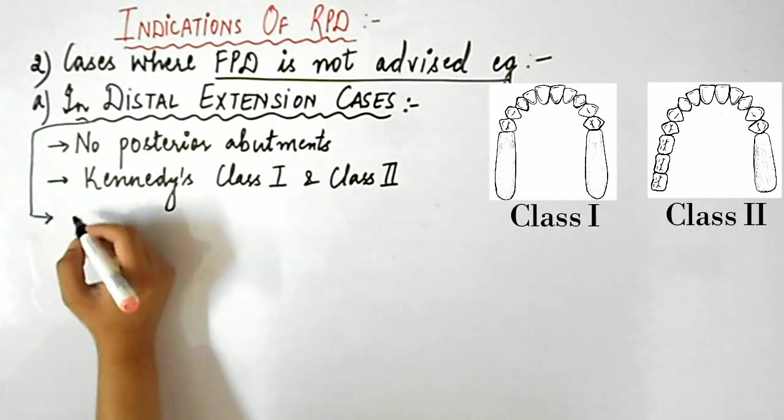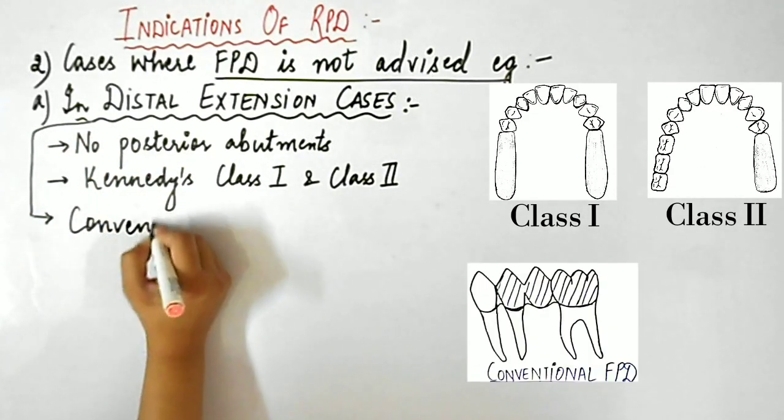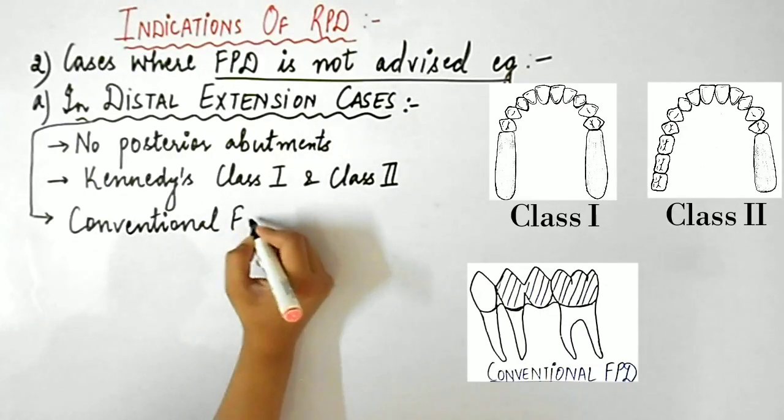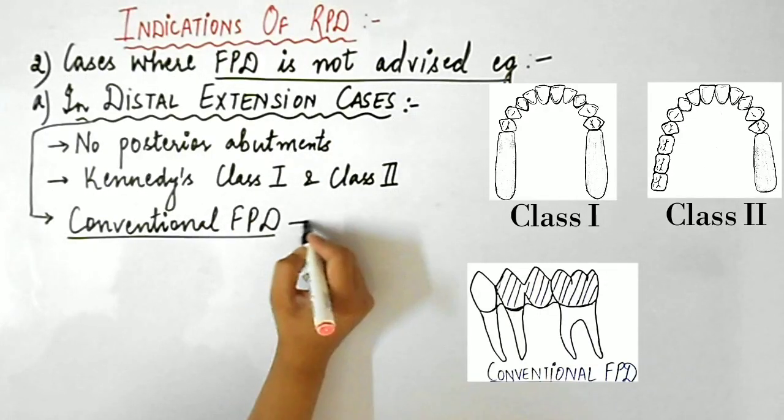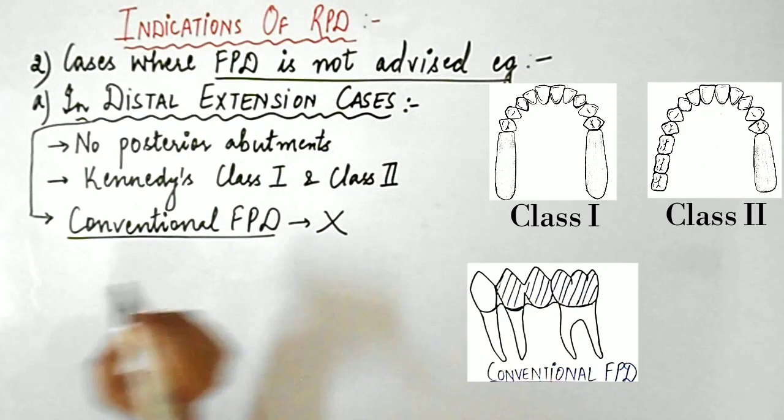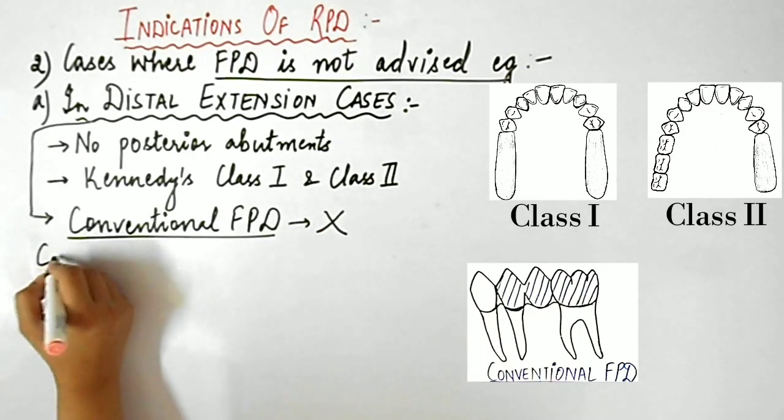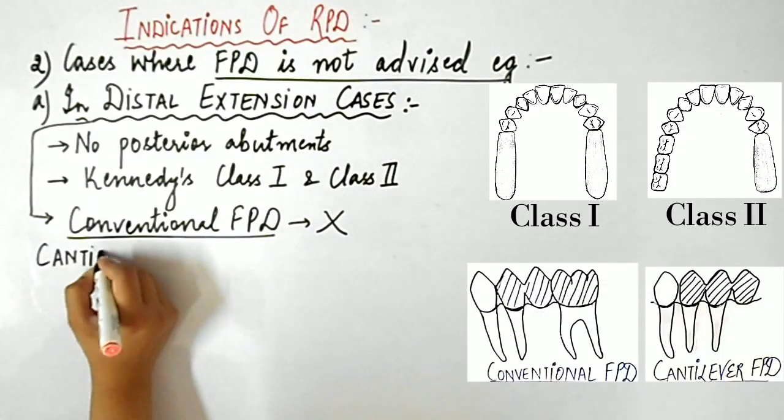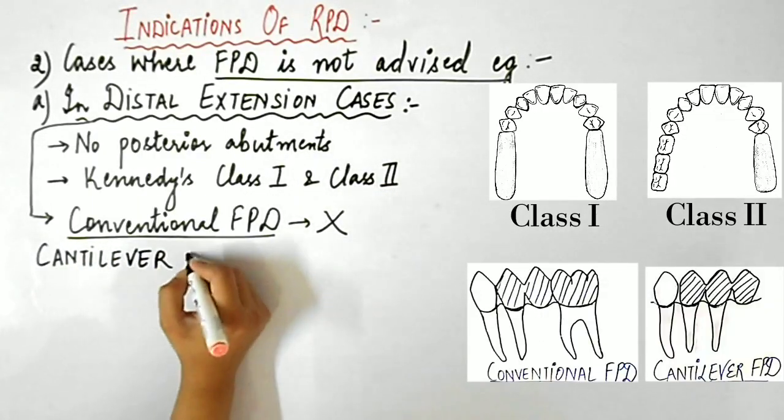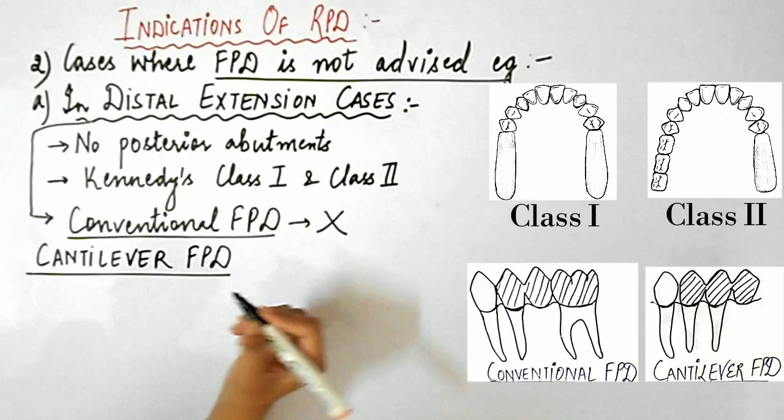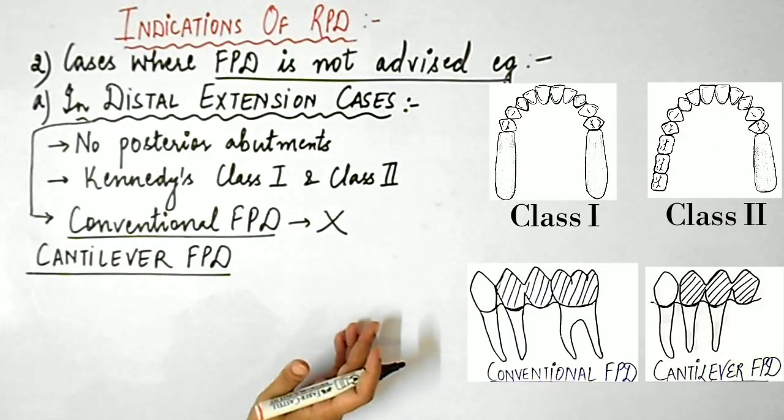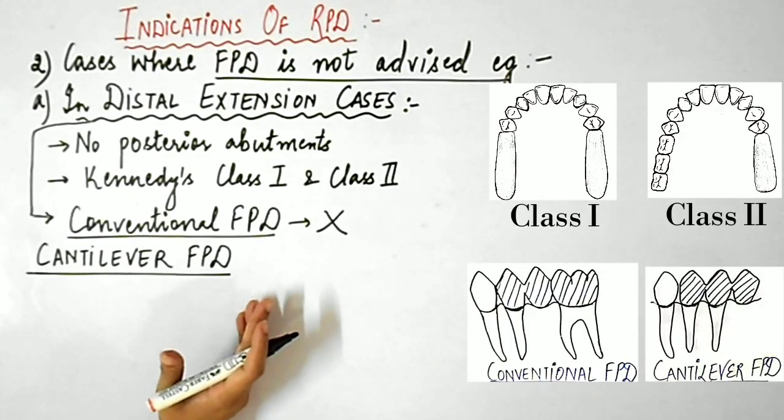What is a conventional FPD? It is one in which the abutments are present both anterior and posterior to the edentulous space, as you can see in the diagram. You can only give a cantilever FPD for such distal extension cases. Cantilever FPD is one where abutments are present only on one side of the edentulous space, as you can see in the diagram.